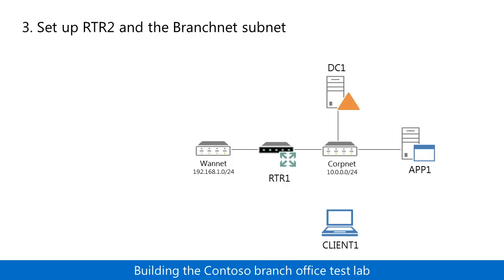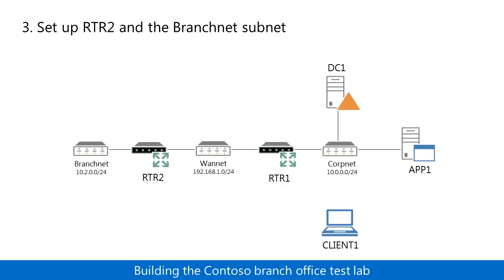In step three, you add the Branchnet subnet and install and configure RTR2, a computer running Windows 7 or Windows 8, whose sole function is the routing of IP packets between the WANnet and Branchnet subnets. RTR2 is not made a member of the corp.contoso.com domain.